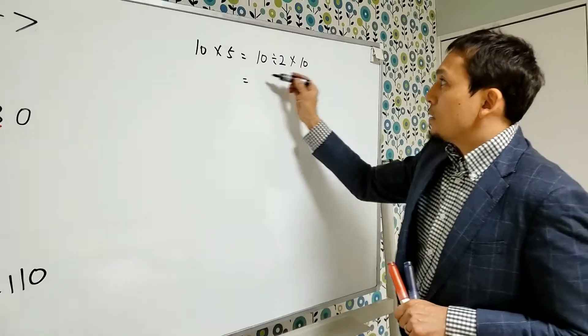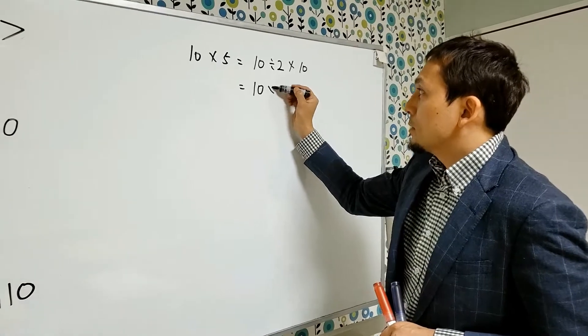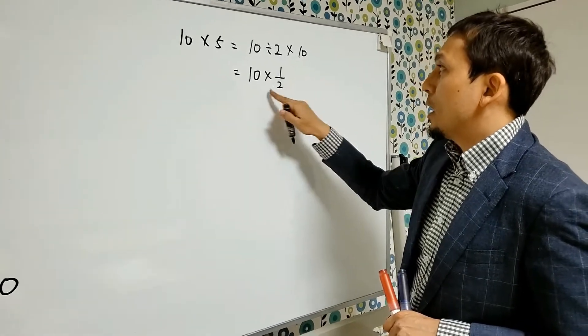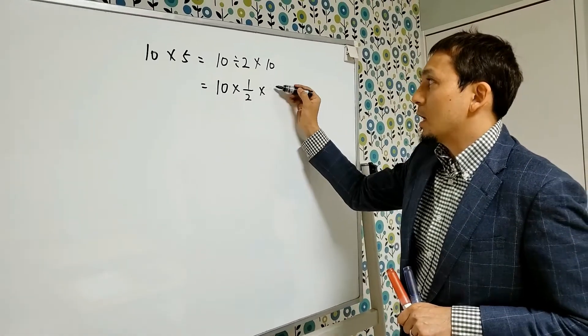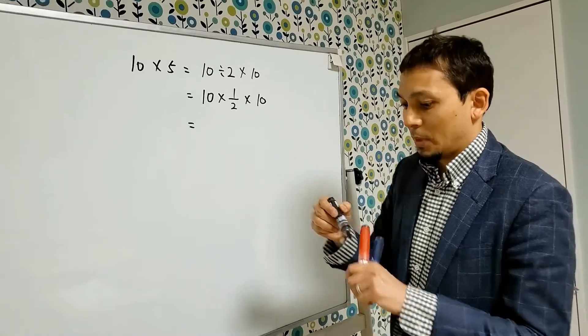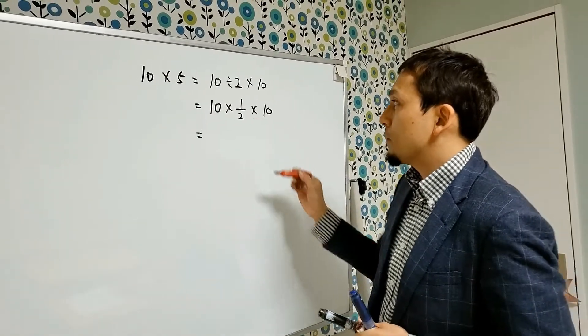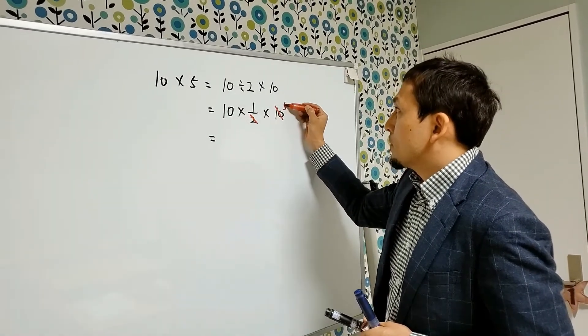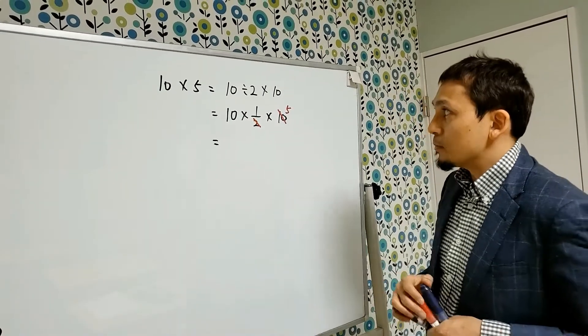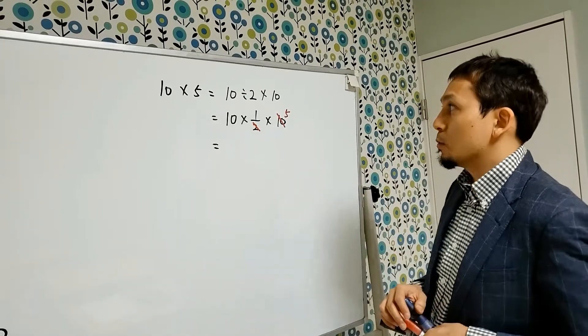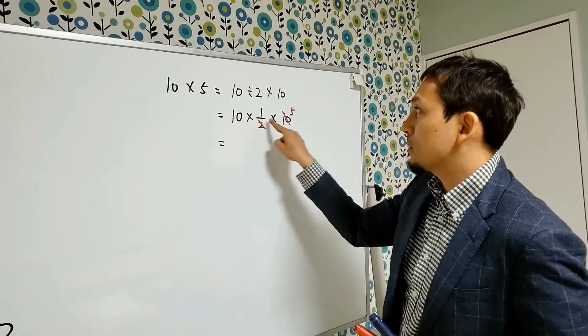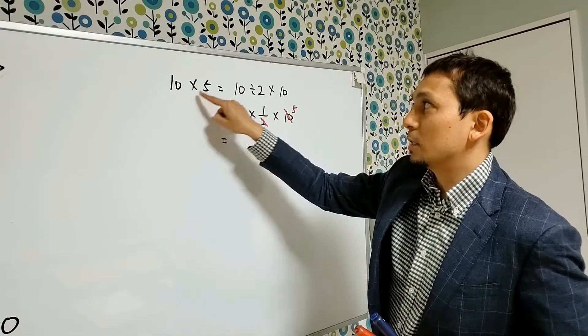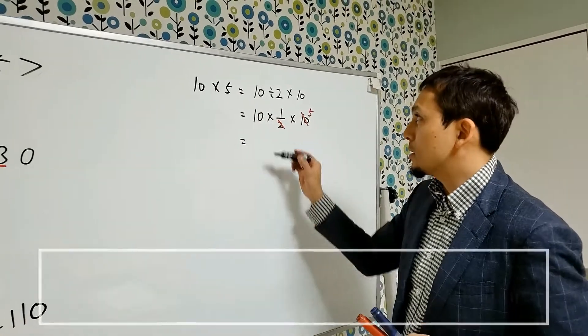10 times 5. This is the same as 10 divided by 2, times 10. When you simplify this part, you can get the result 5 here. This means all you did was, after all, 10 times 5. This is the trick.